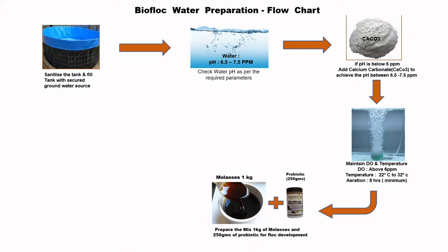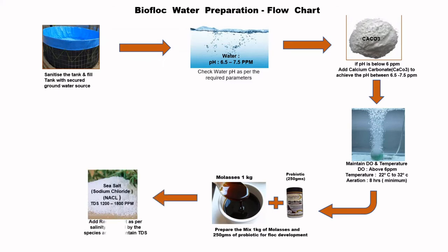Prepare the mix of 1 kg of molasses and 250 grams of probiotic for flock development. Add raw sea salt as per the salinity required by the species to maintain the TDS.